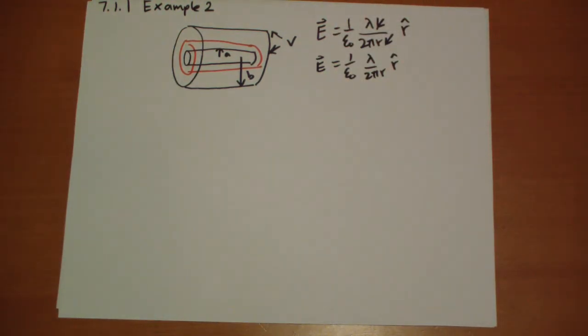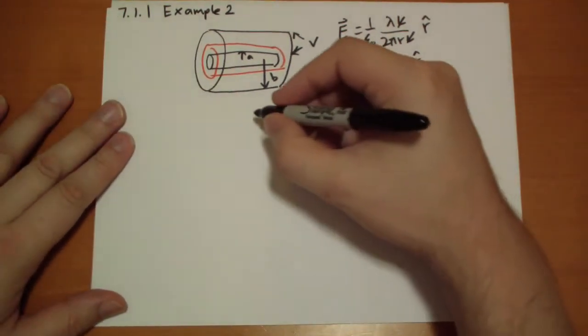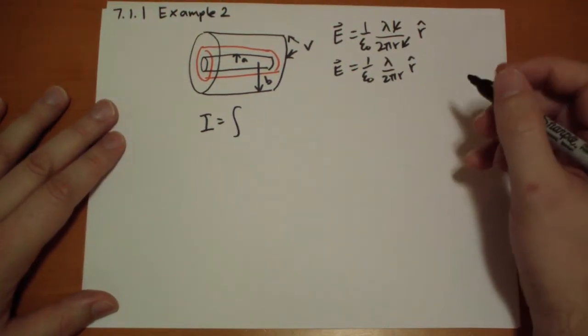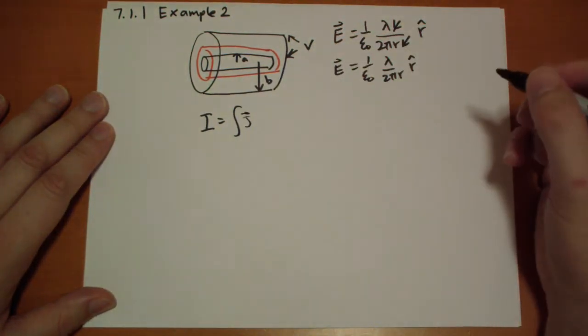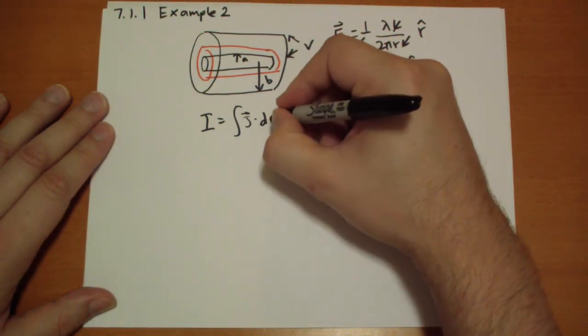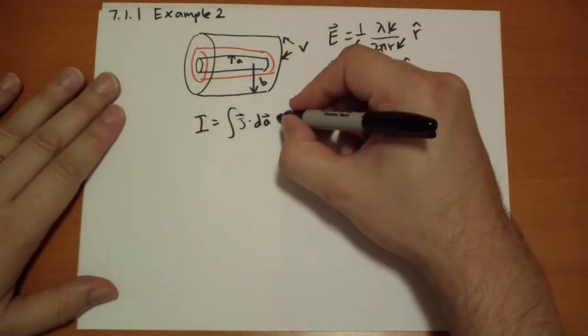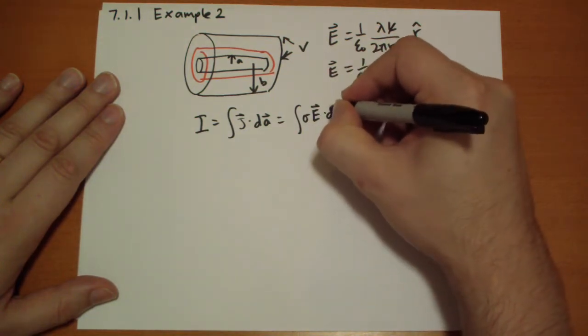Now let's calculate the current from the inside to the outside. We know what the current density is going to be. That's just J equals sigma E. So the current is going to be the integral across a similar surface of the J vector dot the area component there. J is going to point in the same direction as E. It's going to have magnitude sigma E dot dA.